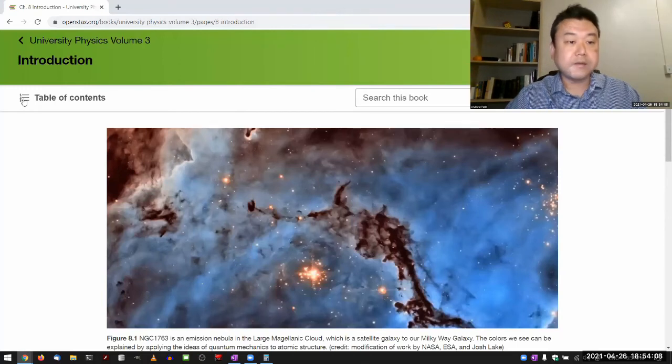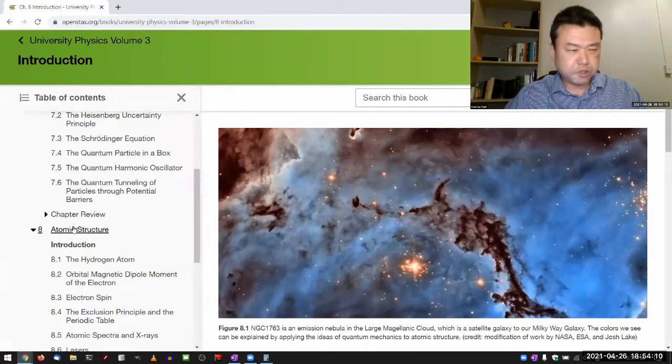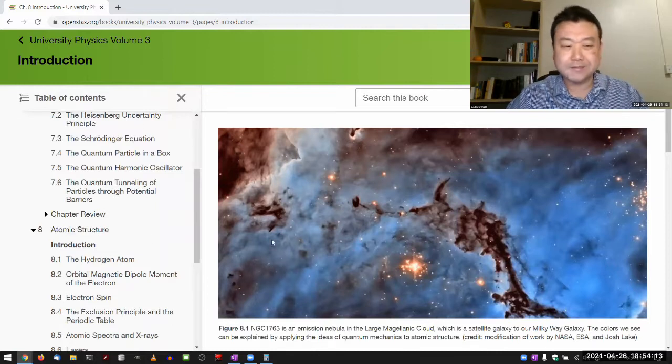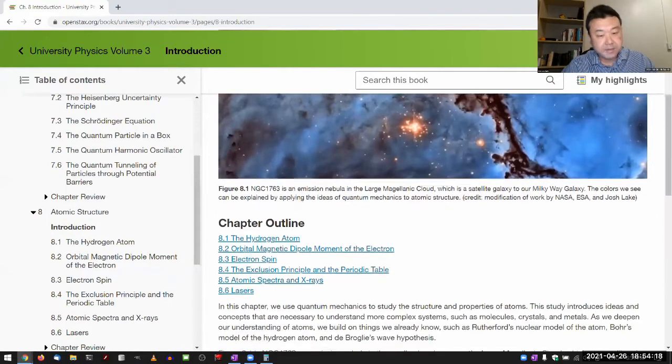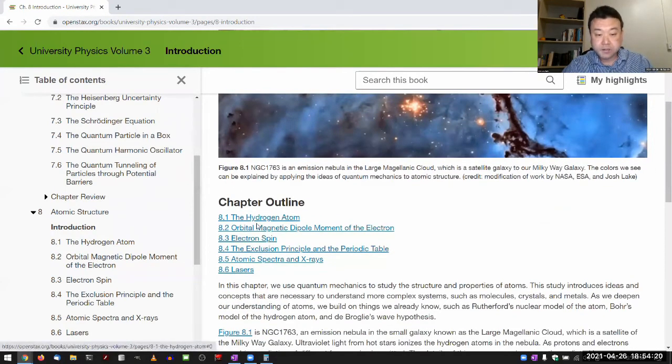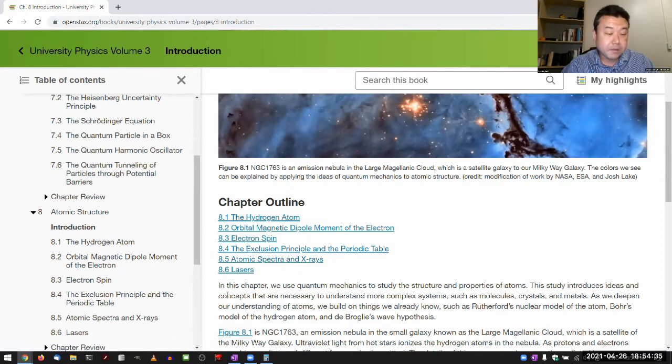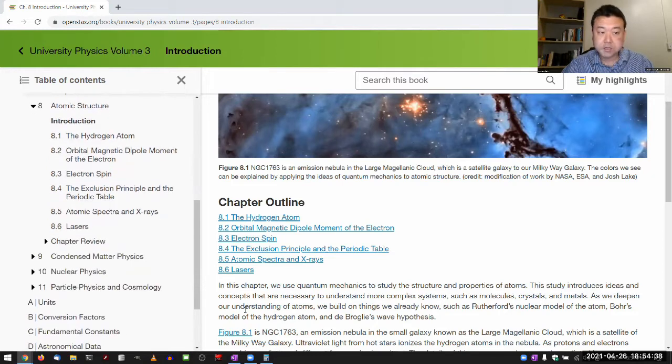So chapter 8, atomic structure. I thought it was named atomic physics. Atomic structure covers the hydrogen atom or mainly the hydrogen atom. Later in the chapter, we also cover topics that relate to multi-electron atoms like helium and lithium.